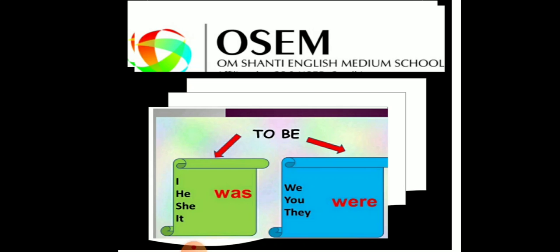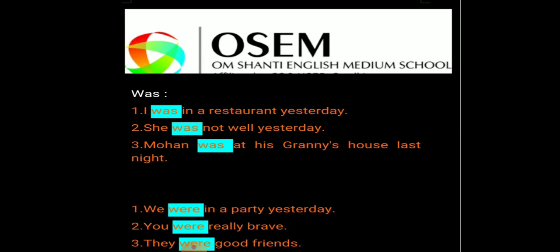Were means we, you and they. Clear everyone? Now let's see the other examples. First, was: I was in a restaurant yesterday — yesterday means past, and I is a singular noun. That's why was.